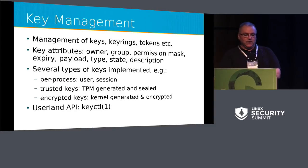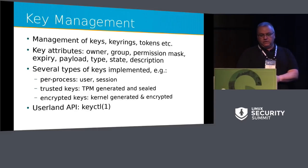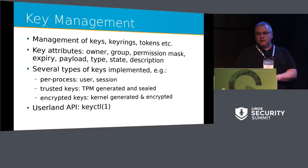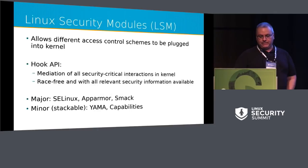There's a key management framework — we'll be getting an update on that from David Howells soon. This is about how the kernel manages keys, key rings, and tokens. Each key has a set of attributes, permissions, and owner. There are different types of keys: per-process keys for a user or session, trusted keys which are kernel-managed and sealed inside the TPM — a very good way of protecting keys from being exposed through kernel vulnerabilities — and encrypted keys which are similar but don't use the TPM. There's also a user space API for interacting with keys.